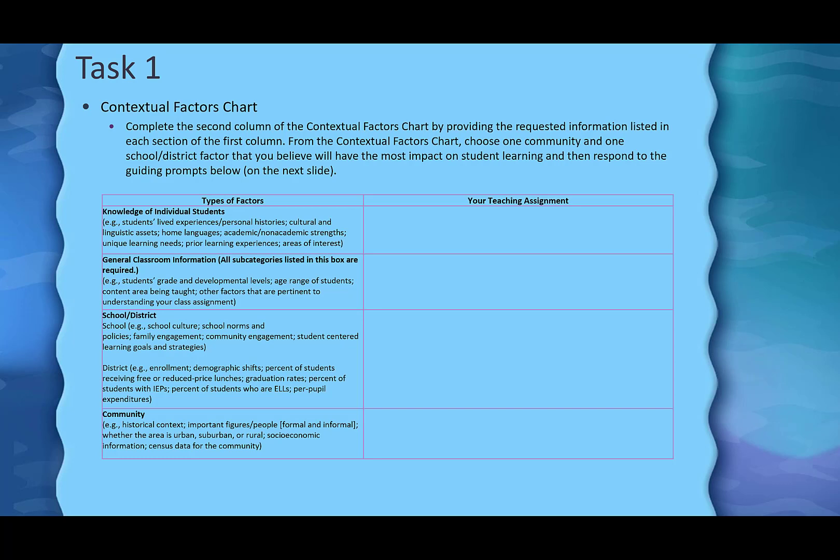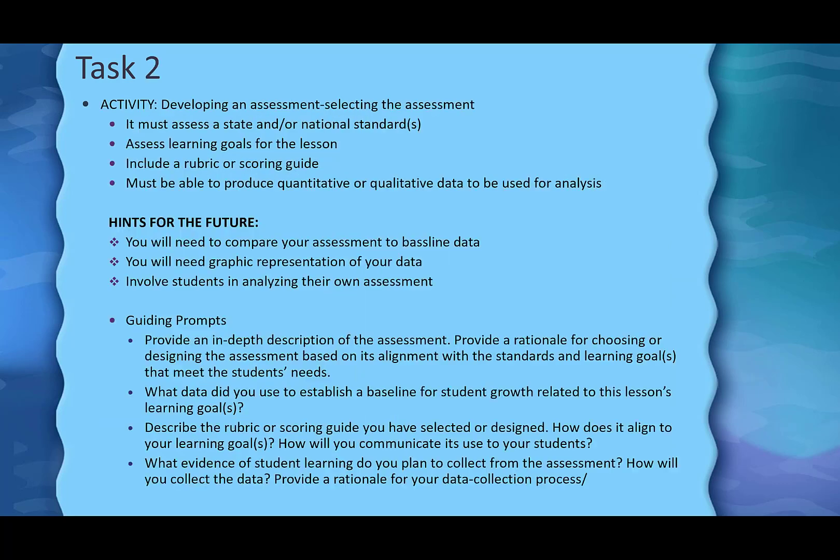If you have switched locations, I suggest filling out another contextual factors chart for your new location before writing the contextual factors paragraph for Task 2. The first activity for Task 2 is to develop an assessment, and there are three parts to it. The first is selecting the assessment.